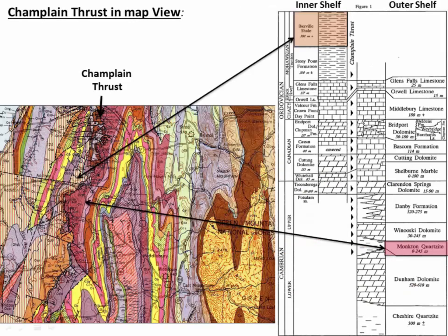Here's that same concept in map view. Middlebury is here, Snake Mountain is roughly here, and the Champlain thrust intersects the surface right along this black line. What we see is that the older, deeper rock of the Moncton Quartzite is thrust up and over the much younger rock of the Iberville Shale — a pretty classic thrust relationship.